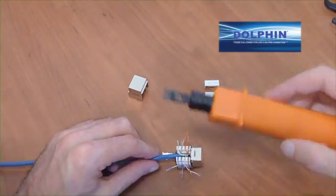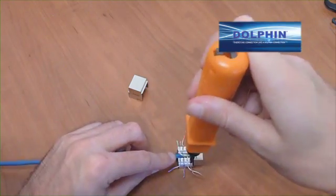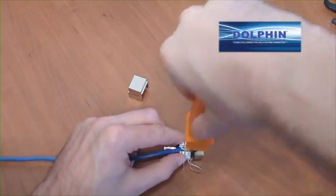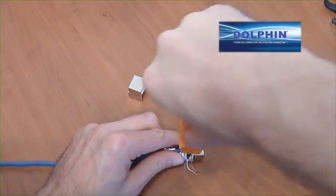Using the punch down tool with the cutting edge on the outside edge of the jack, punch wire down into the teeth and tool will cut off the excess wire.